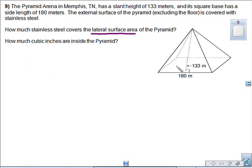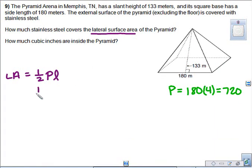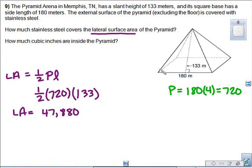First one is lateral surface area, because we're not including the base. The floor is not covered in stainless steel. So lateral surface area is ½PL. And you have to remember that P stands for perimeter of the base. So our base is a square, so the perimeter of a square is just the side length times 4, so that gives you 720. Slant height is what that L stands for, and slant height is given as 133. So if we plug in 720 and 133, you get that the lateral area, this is how much stainless steel they'll need, is 47,880 meters squared. So that's the amount of stainless steel.